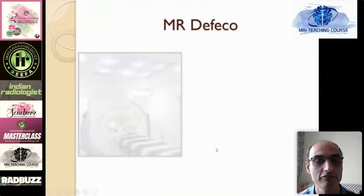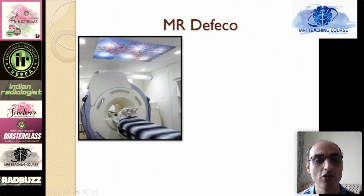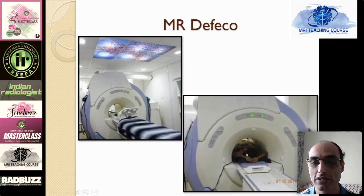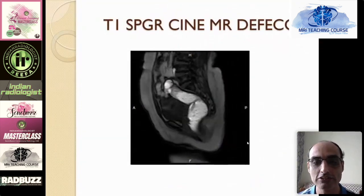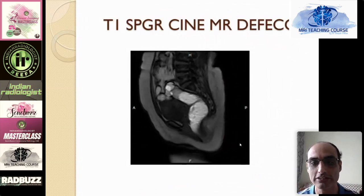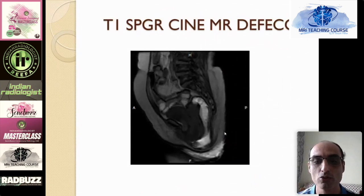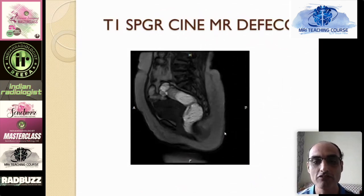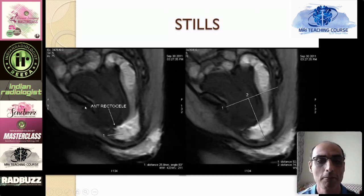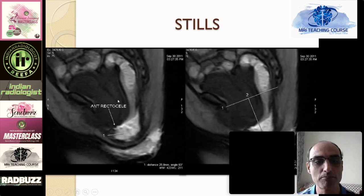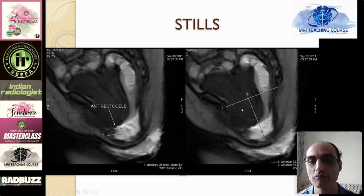As things evolved, we started using MR defecography with a 1.5 tesla magnet. Initially we were using a T1-weighted SPGR Cine sequence — we mixed a little gadolinium in ultrasound jelly and gave it per rectum, then asked the patient to perform straining and defecation maneuvers. These images gave good detail of the posterior compartment and you could see the rectocele, but the anterior and middle compartments were just a blob of hypointense soft tissue without much information.